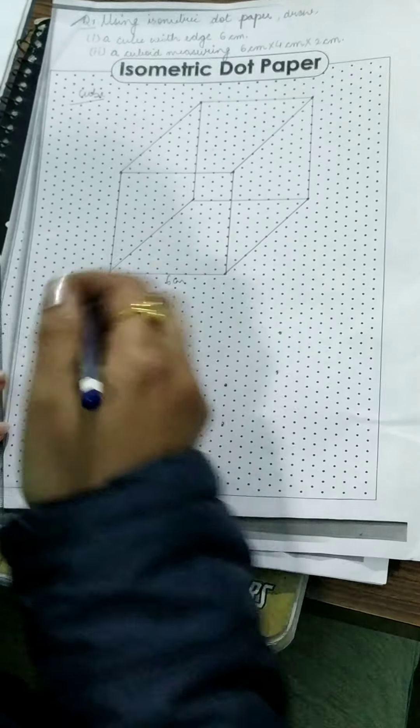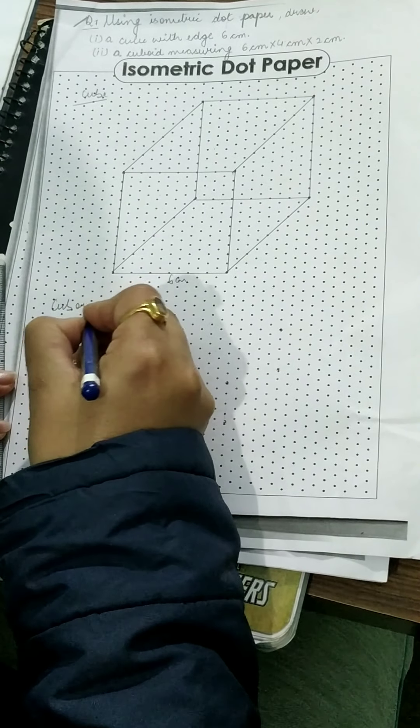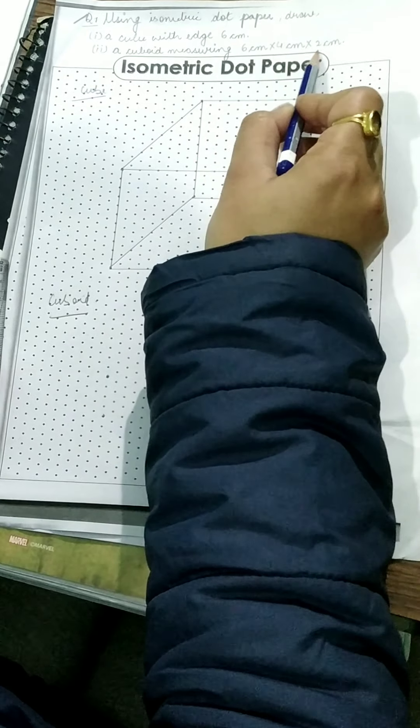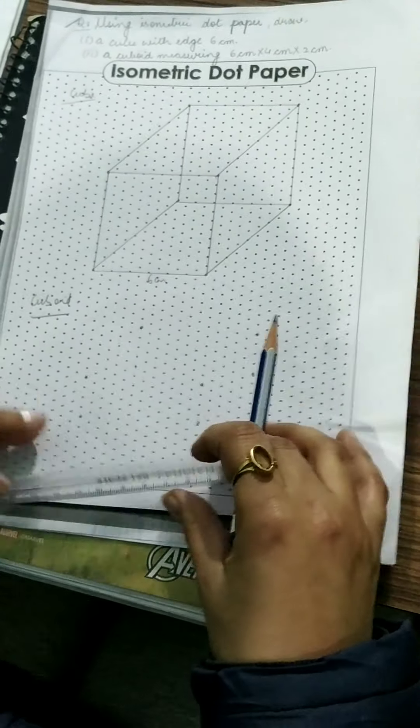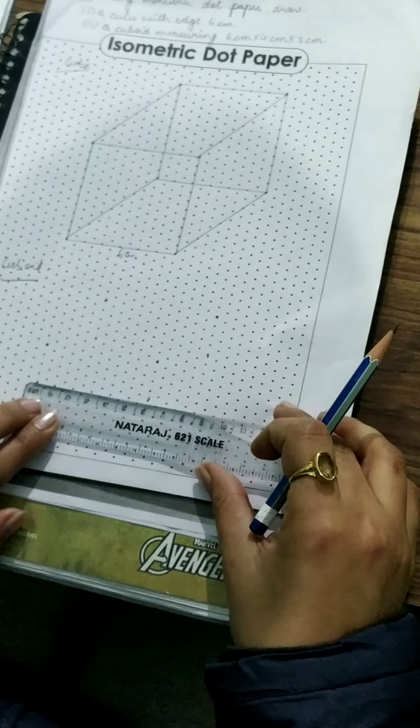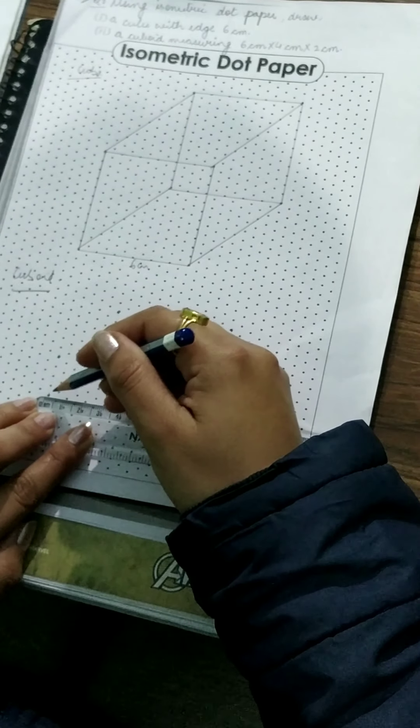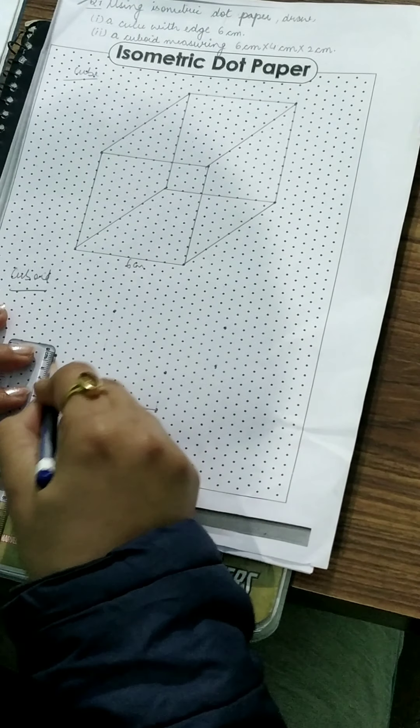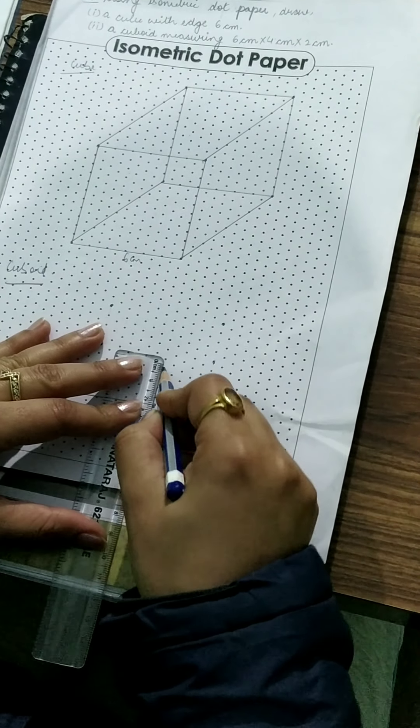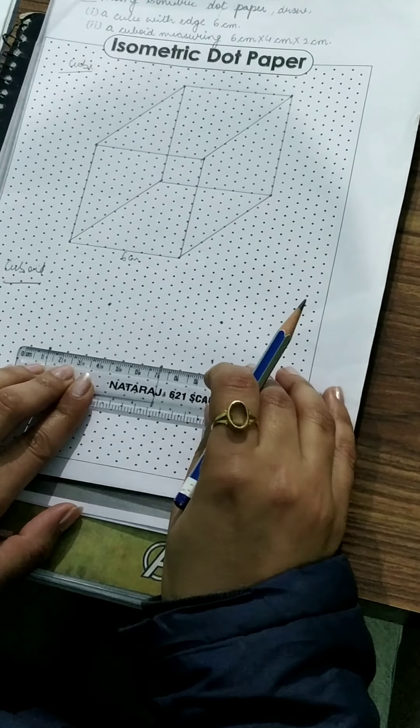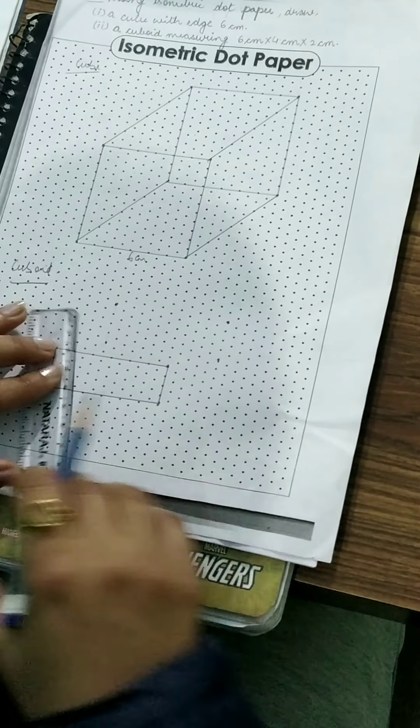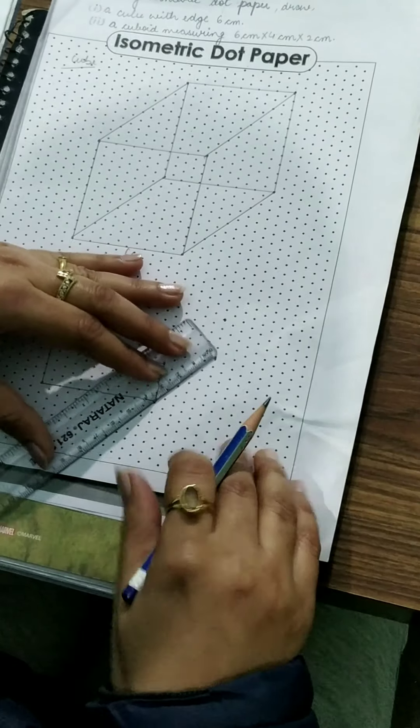Next is second part is cuboid. Dimension of cuboid is given to you: 6 cm, 4 cm and 2 cm. So first of all draw a line 6 cm. This will be your 6 cm line. Next, this is your 2 cm. Draw a rectangle of length 6 and breadth 2 cm.